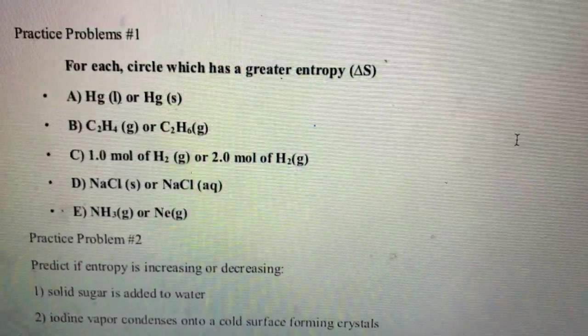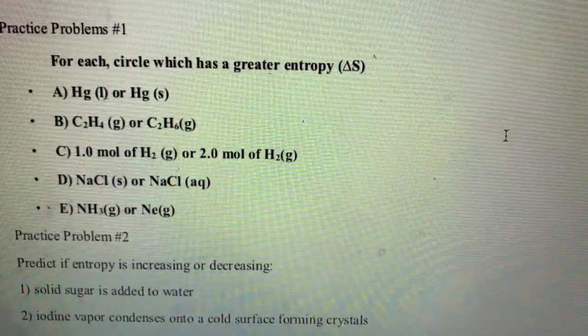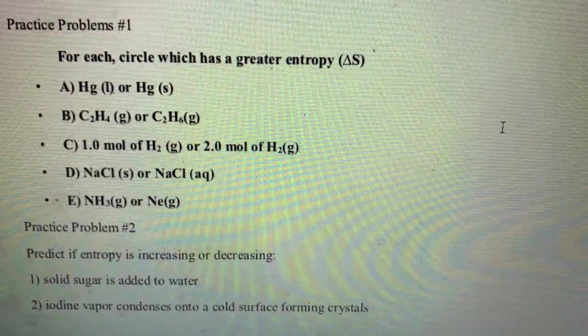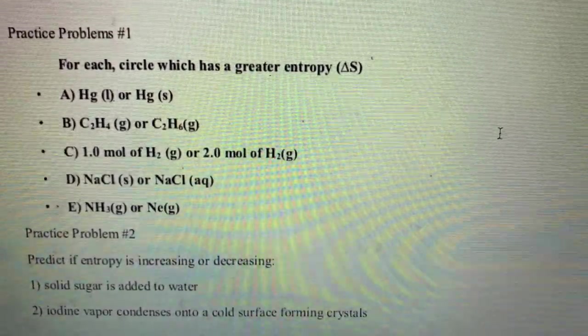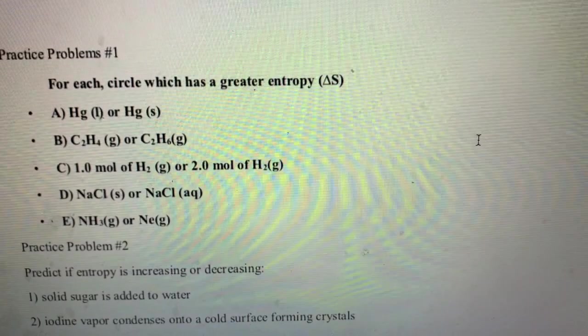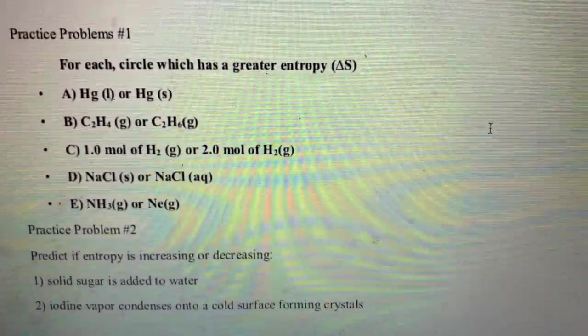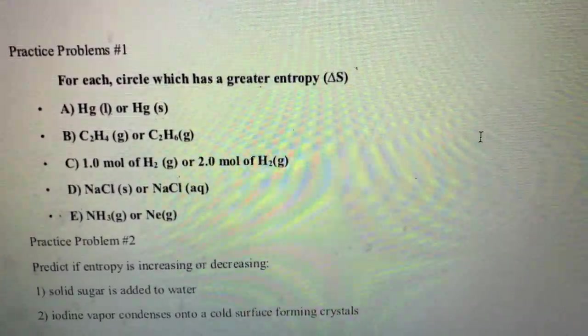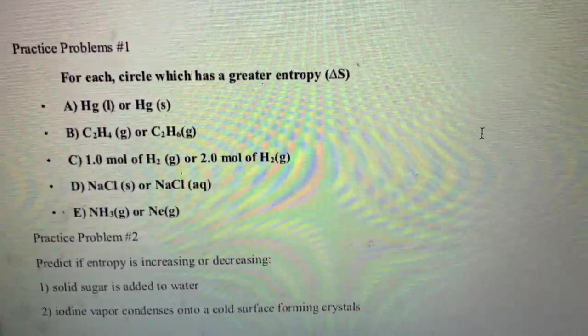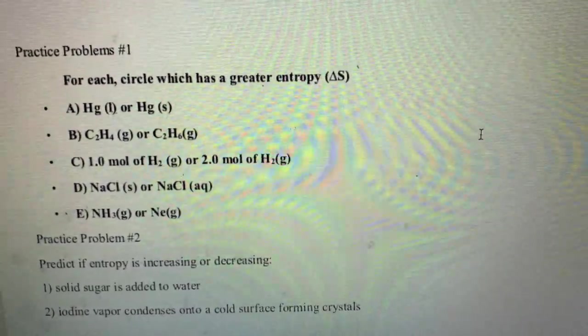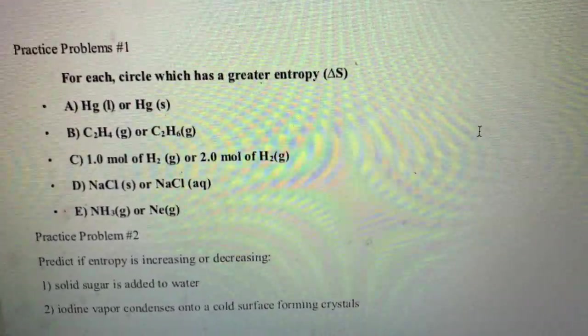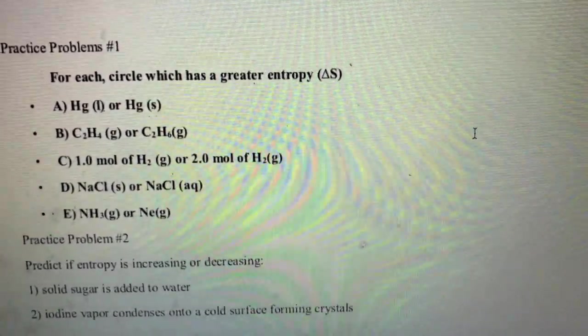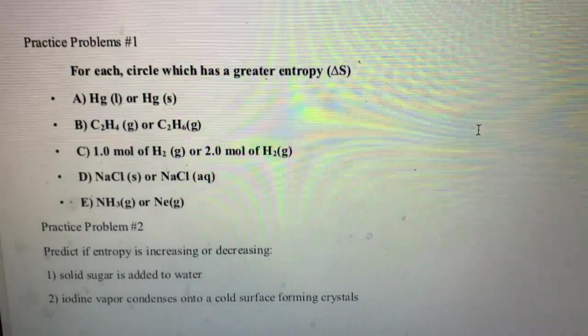Sample C, we're talking about different amounts - the exact same thing, hydrogen, but one mole compared to two. The greater the amount, the greater the entropy, so that's going to be two moles. Letter D is just like the example with table salt - solid salt or salt water, and salt water is going to be more random. In letter E, we're looking at ammonia versus neon gas, and ammonia is both a larger molecule and has more atomic complexity, so that's going to be your choice for the greater entropy.